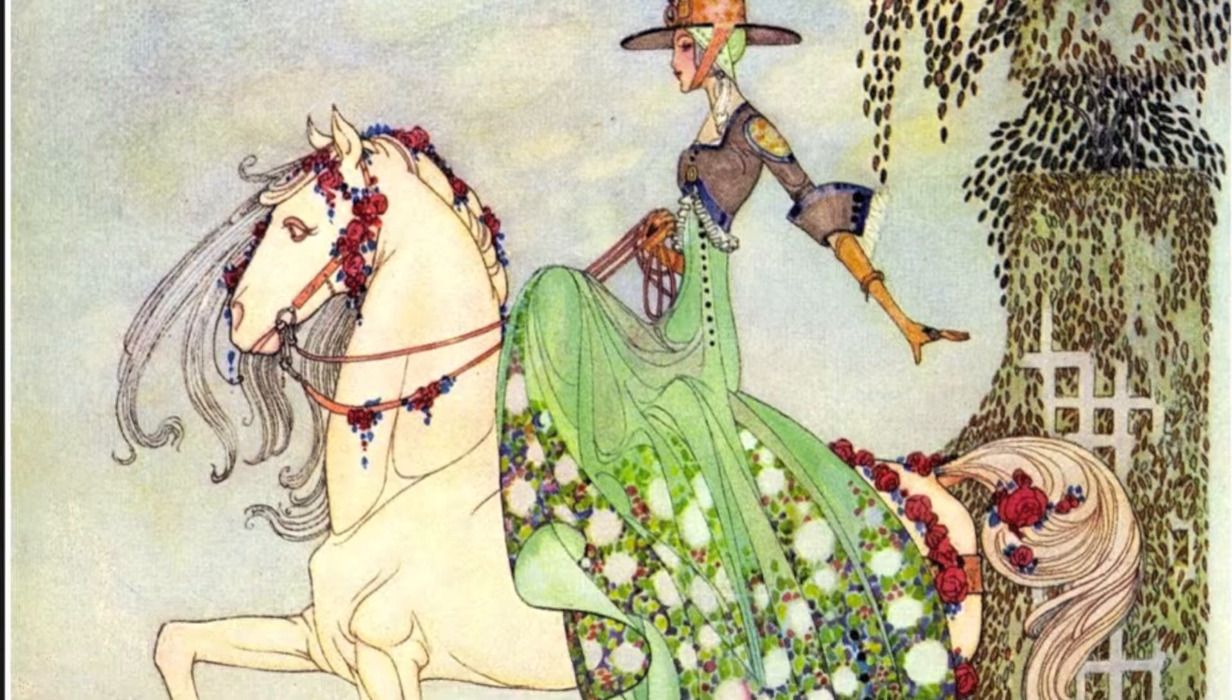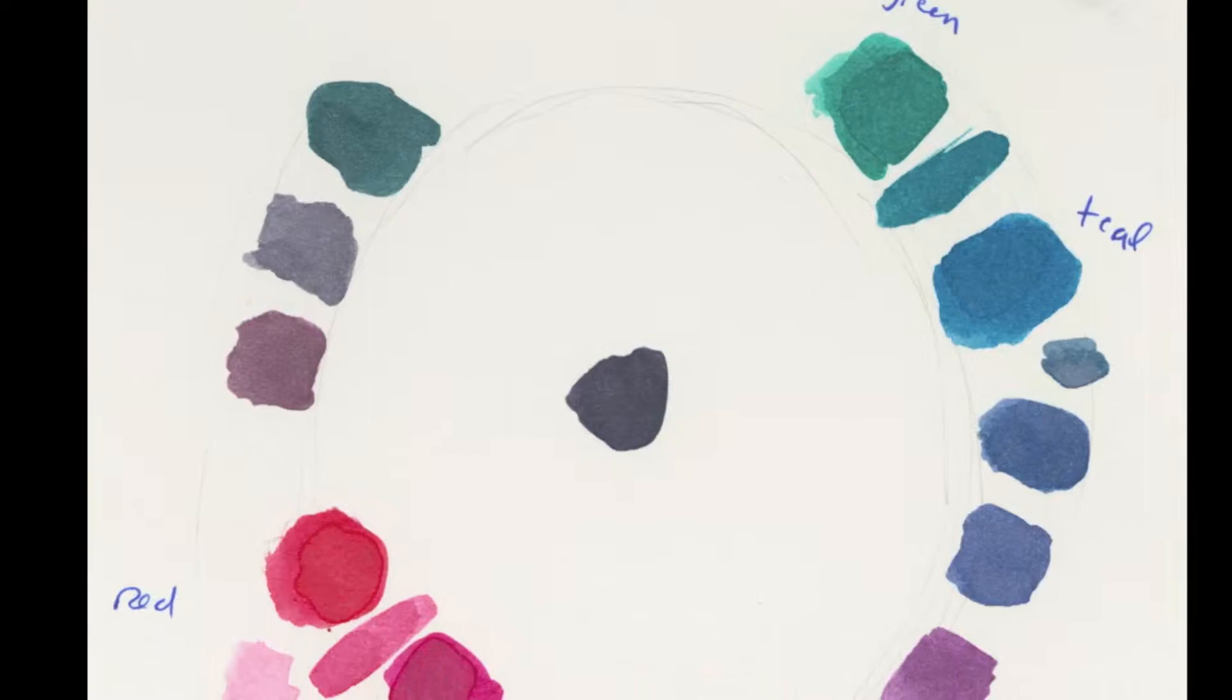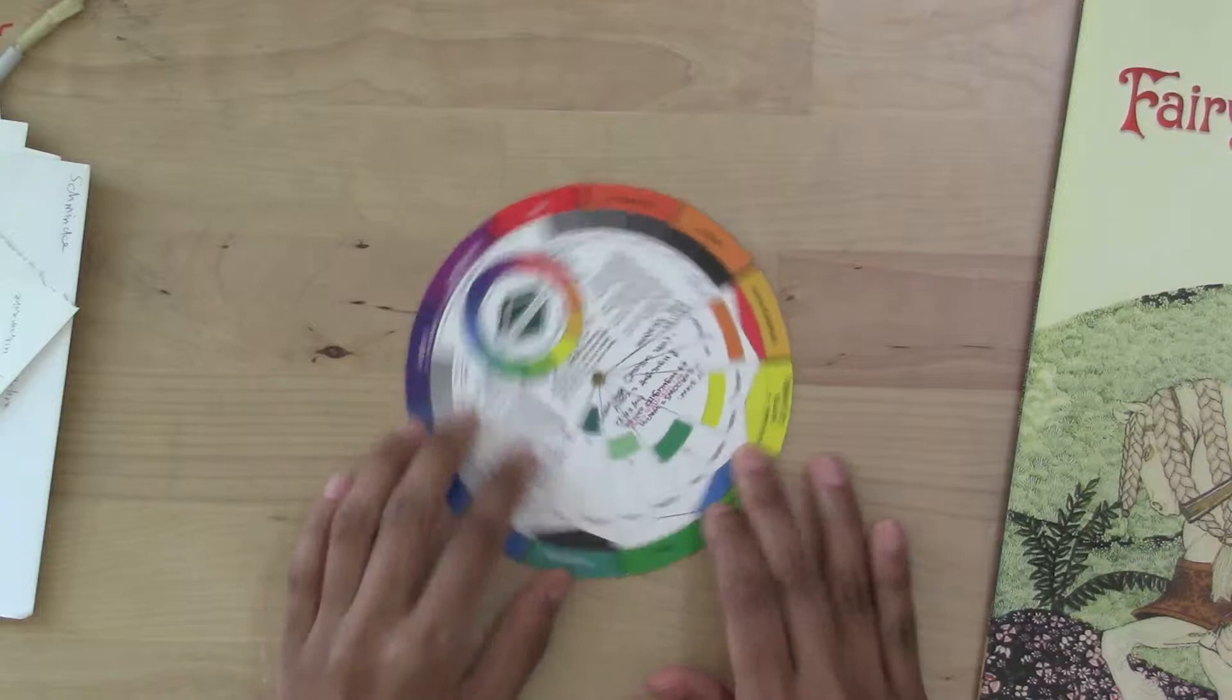We've been learning how to paint from the masters of the Art Nouveau movement and we've been using limited palettes. Today we're going to use an adjacent complementary tetrad, which is a palette we have not used before.